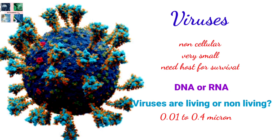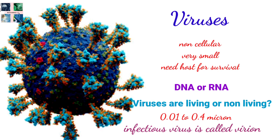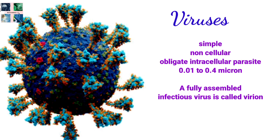A fully assembled infectious virus is called a virion. The main function of the virion is to deliver its DNA or RNA genome inside the host cell so that the genome can be expressed, transcribed, or translated by the host cell. Each viral species has a very limited host range — that is, it can reproduce only in a small group of closely related species.